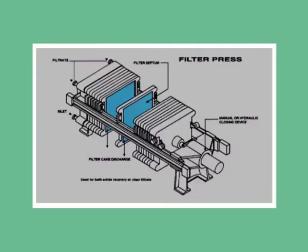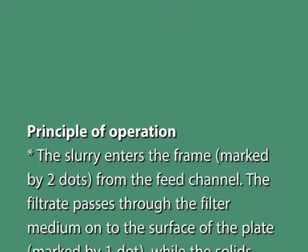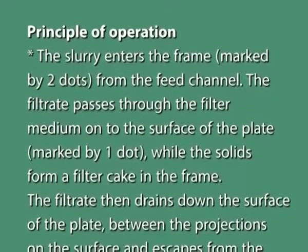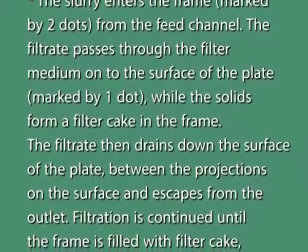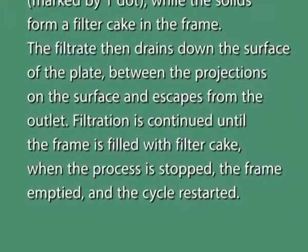The filter press and filter leaf play a very important role in filtration and clarification. The filter press is made up of two types of units: plates and frames, with a filter medium usually filter cloth between the two. The frame is open with an inlet for the slurry, while the plate has a grooved surface to support the filter cloth and an outlet for the filtrate. In operation, the slurry enters the frame marked by two dots from the feed channels. The filtrate passes through the filter medium onto the surface of the plate marked by one dot, while solids form a filter cake in the frame. The filtrate then drains round the surface of the plate and escapes from the outlet.